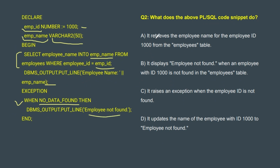Let's see the options. Option: 'It retrieves the employee name for employee ID 1000 from the employees table' — yes, it is retrieving, but it is not merely doing just that part. Option: 'It displays employee not found when an employee with ID 1000 is not found in the employees table' — yes, this is correct. Option: 'It raises an exception when the employee ID is not found' — no, it will not raise an exception; instead, we have handled this exception. Option: 'It updates the name of the employee with ID 1000 to employee not found' — no, nothing like that. So option B is our correct answer.